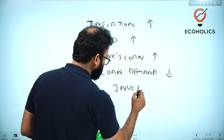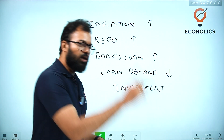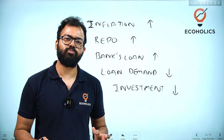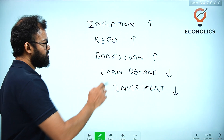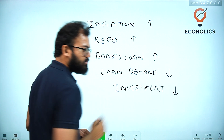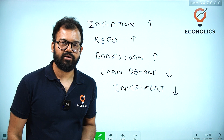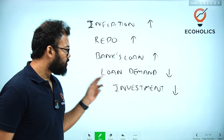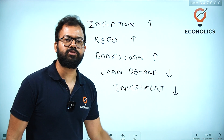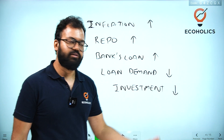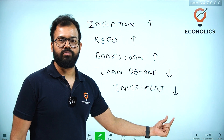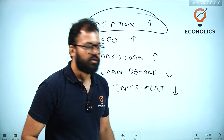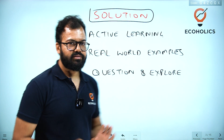When loan demand goes down, what happens to investment? Investment goes down, because the cost of borrowing — the interest rate — goes up. For example with home loans: if after RBI raises the repo rate the home loan rate moves from nine percent to ten percent, loan demand comes down, people buy fewer homes or wait for the interest rate to fall. Investment goes down, and when investment goes down, GDP, employment, and everything else goes down. This is how RBI controls inflation — a real world example of active learning in practice.